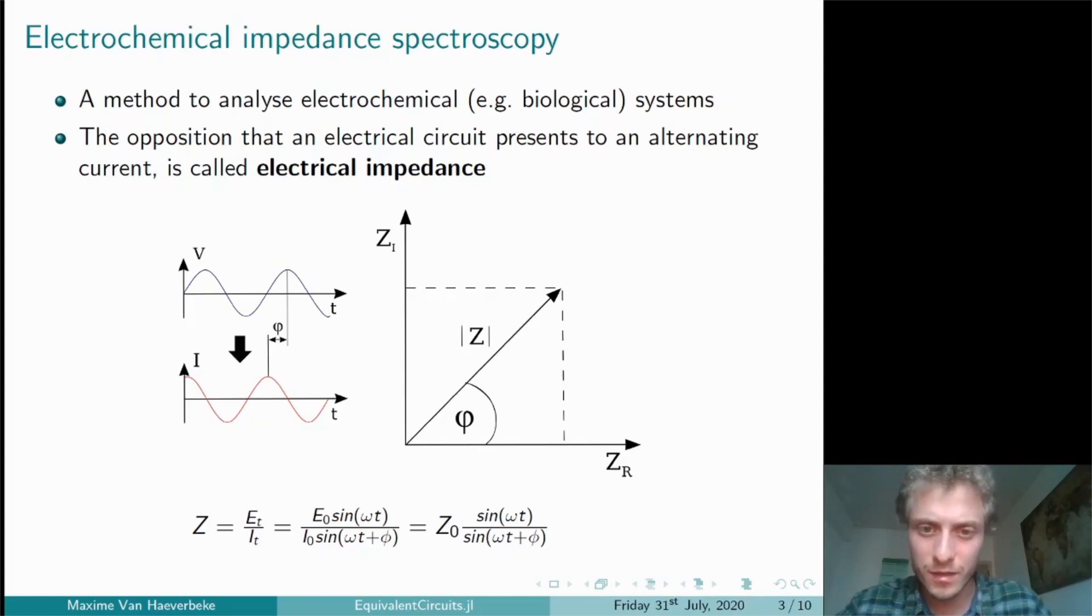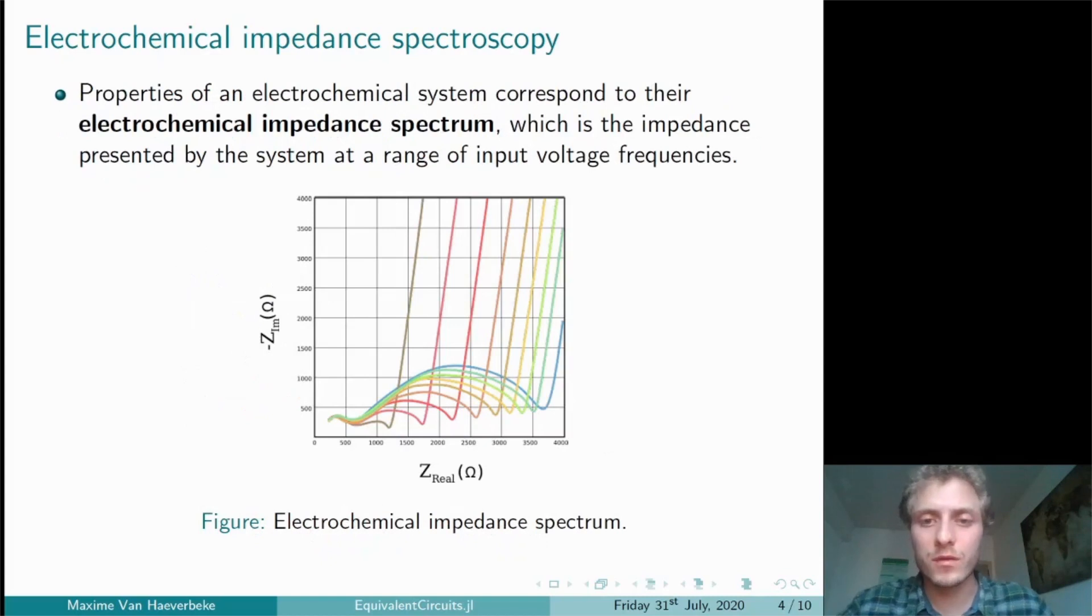Impedance values are typically described with a magnitude and a phase shift between the input voltage and the current. Alternatively, they can also be described as a point on a complex plane with a real resistance component and an imaginary reactance component. In order to obtain an electrochemical impedance spectrum, impedance measurements have to be conducted over a range of different frequencies.